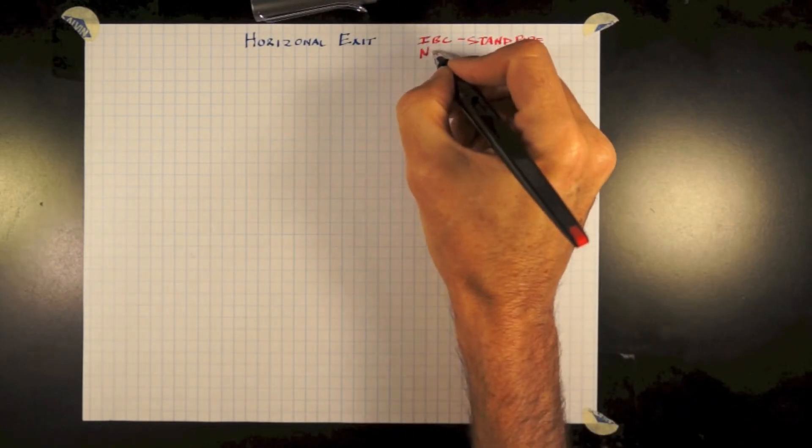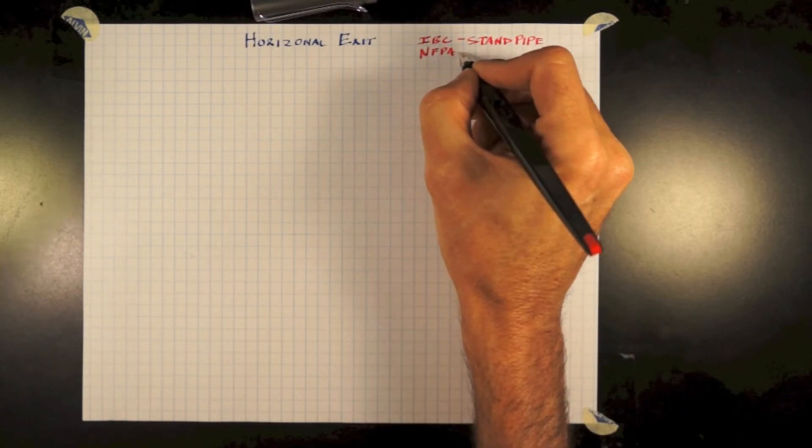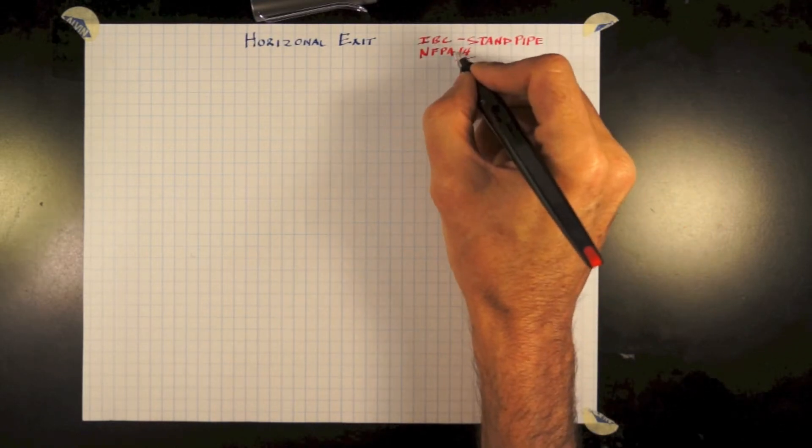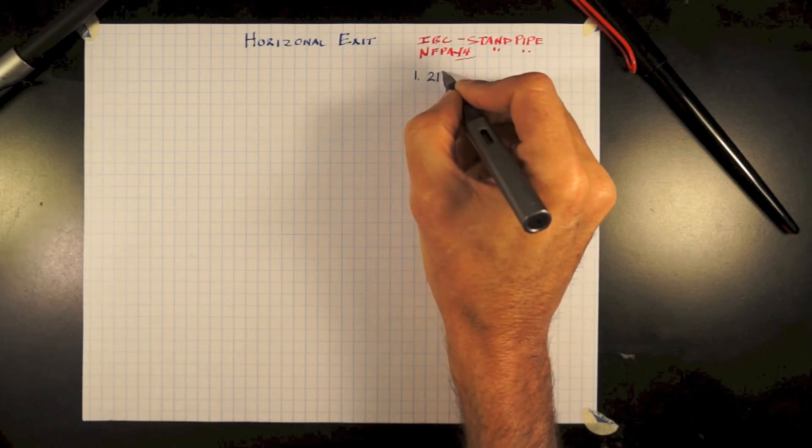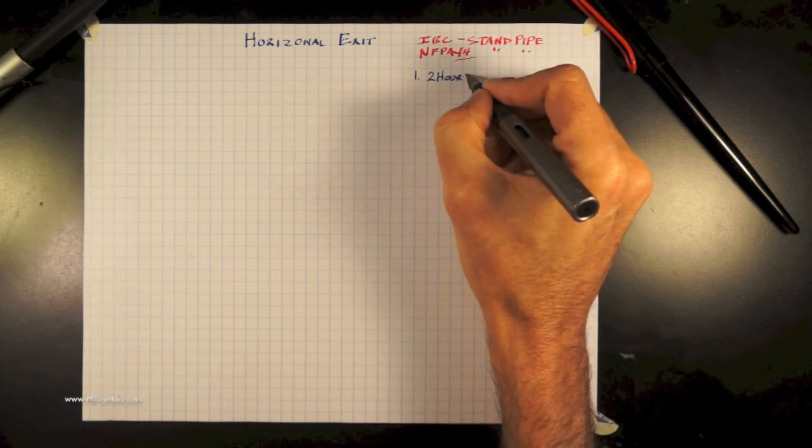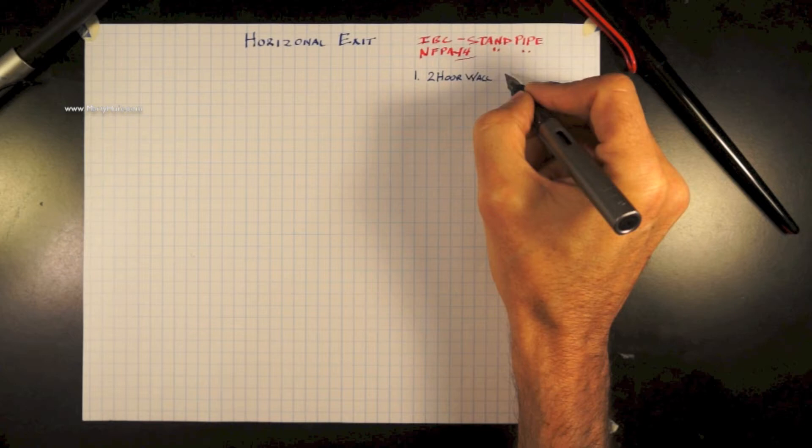Horizontal Exits. There are two things that we need to know about first. IBC has a section called Standpipe. Please read it. That's what this video is mostly about, as well as NFPA 14.